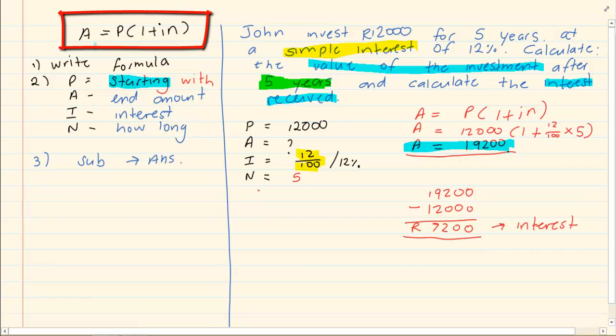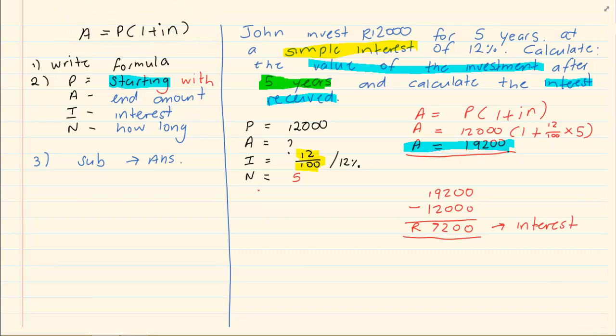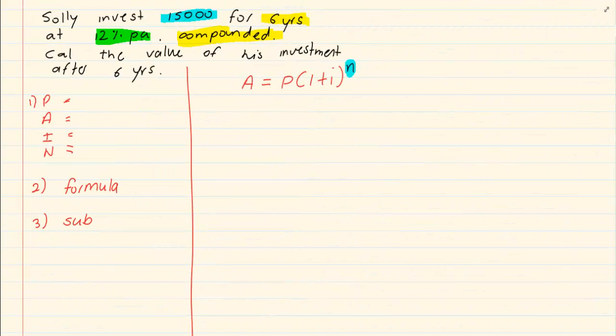Whereas in your simple interest formula here, the N was inside. Now you are going to do the exact same thing. We are going to fill in our PAIN.